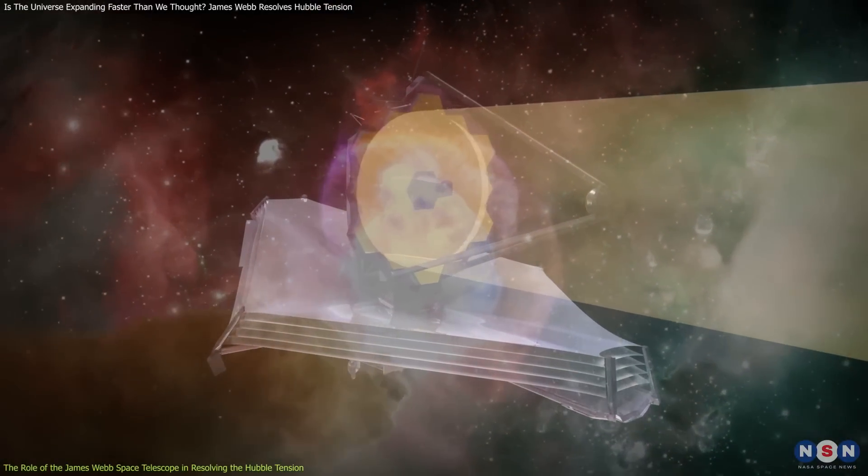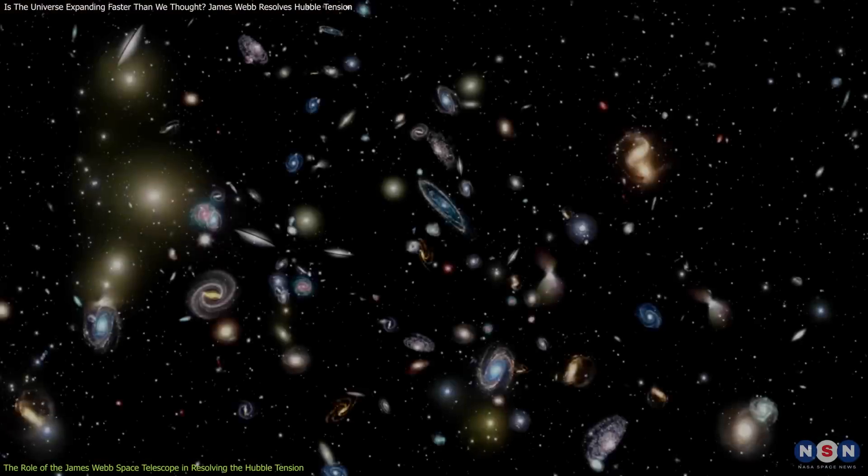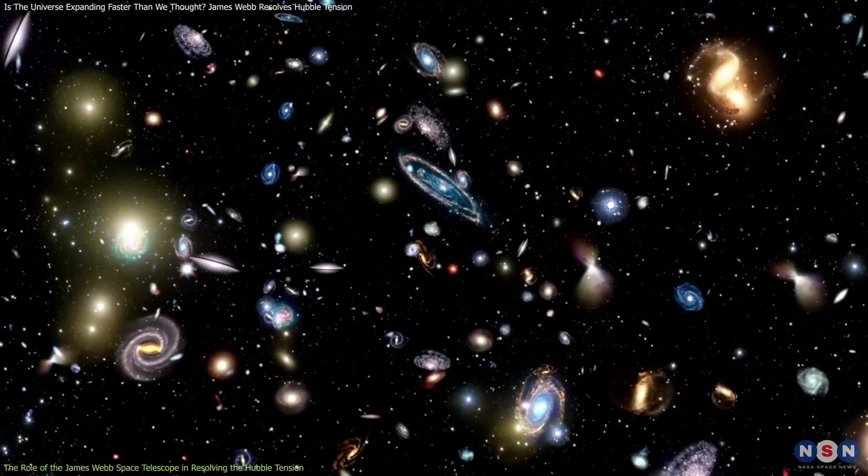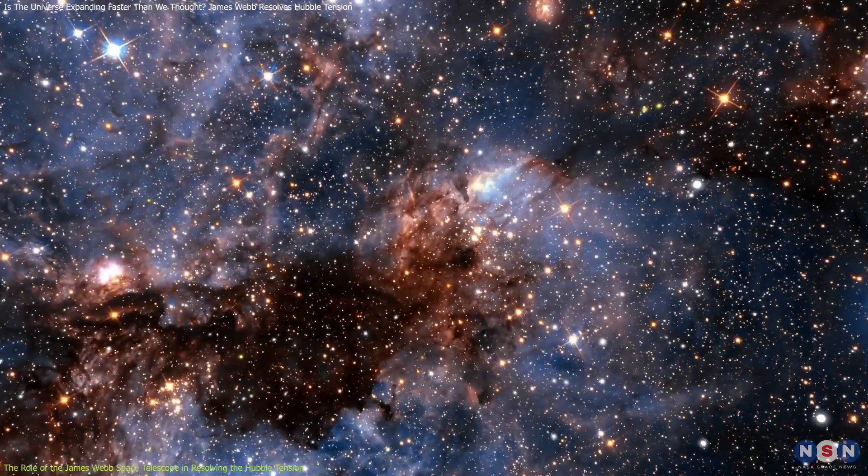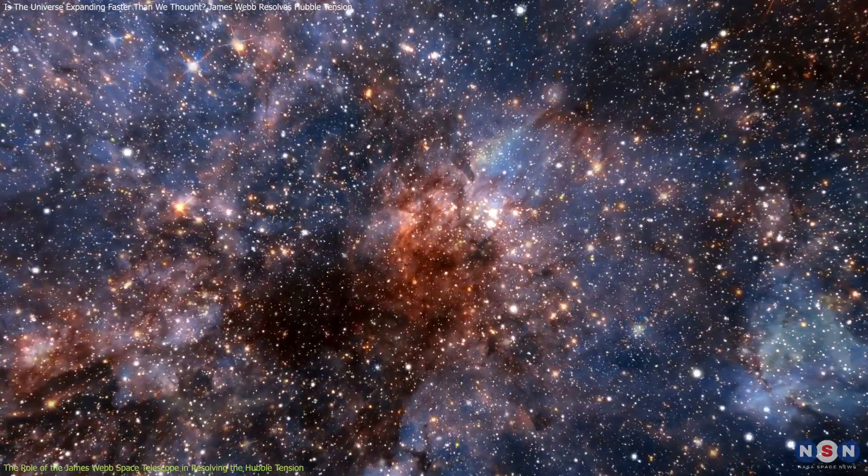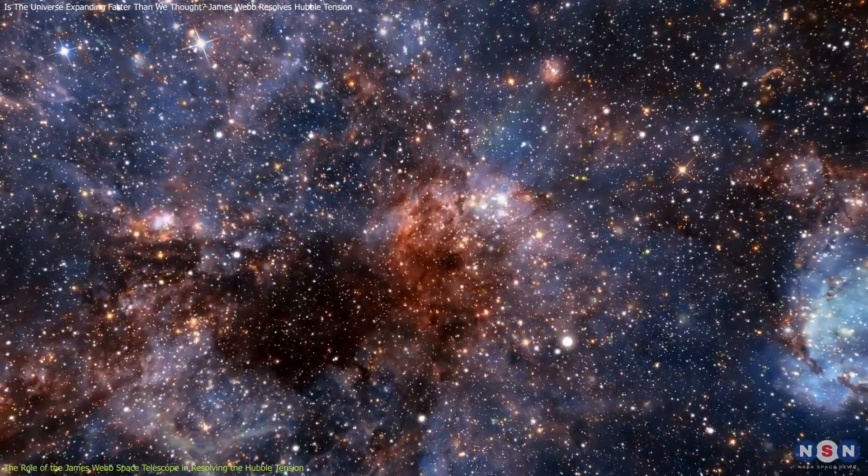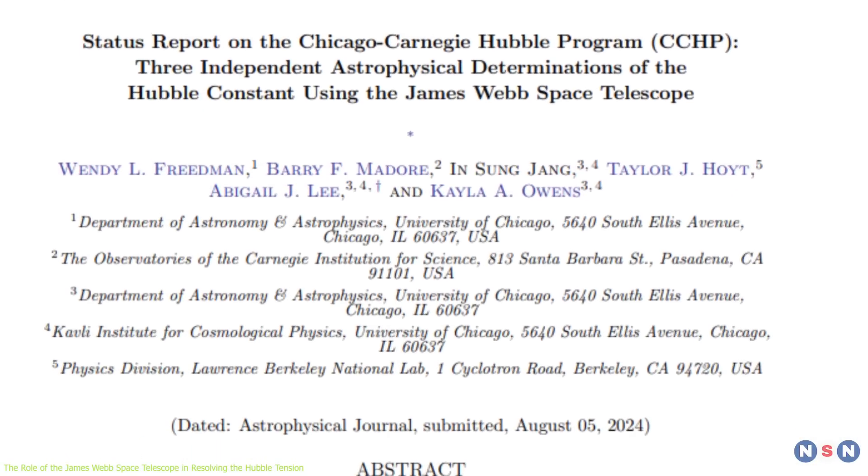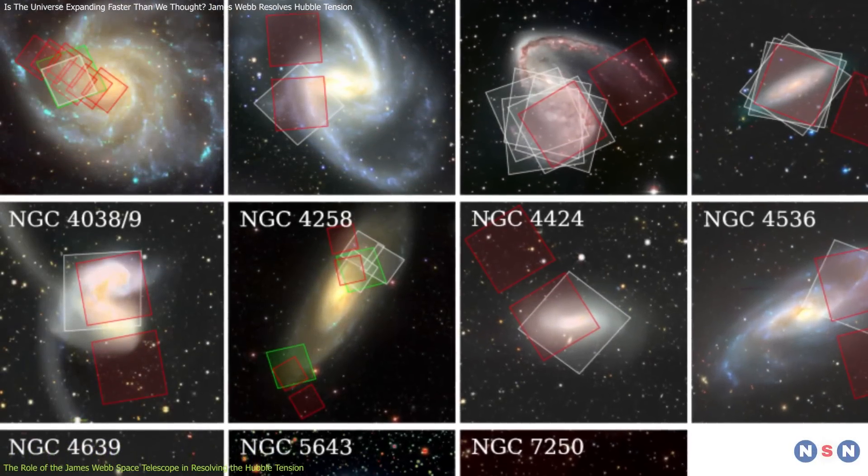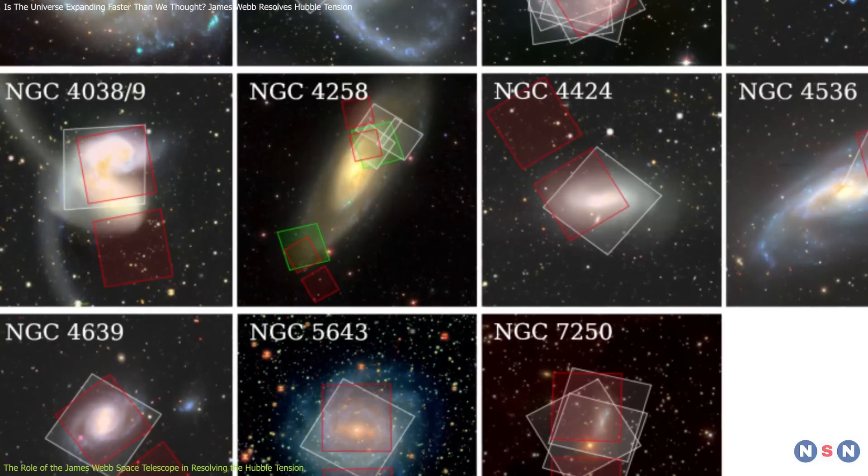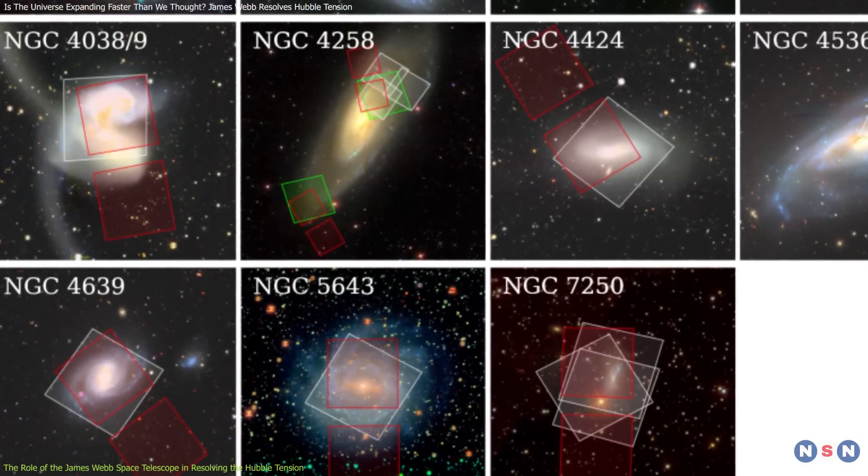Webb's infrared light penetrates cosmic dust more effectively than visible light, enabling it to capture clearer images of stars and galaxies that might otherwise be obscured, which is pivotal for measuring the Hubble constant using different types of stars and comparing those measurements across different cosmic epochs. Wendy Friedman and her team at the University of Chicago utilized Webb to observe 10 nearby galaxies, focusing on three distinct types of stars to measure the universe's expansion.